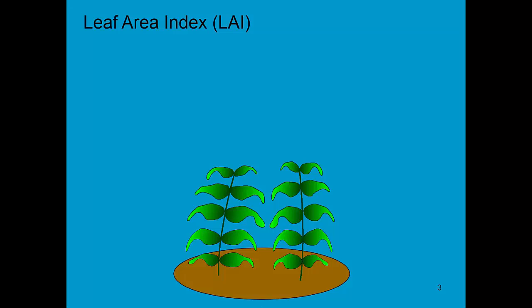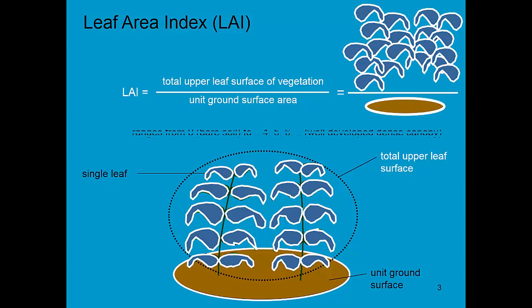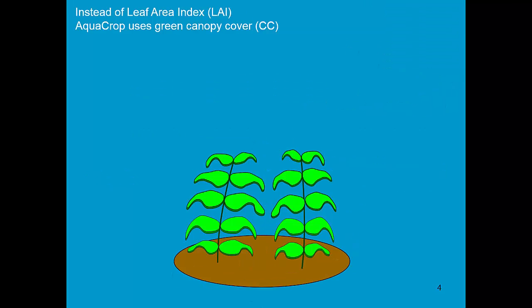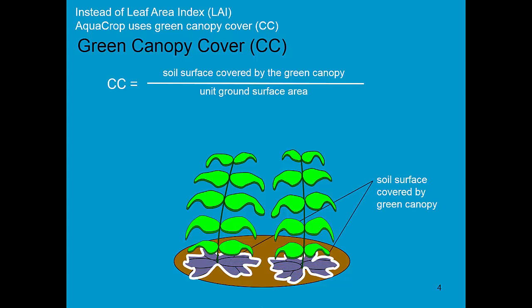A lot of models use the leaf area index. The leaf area index considers the upper surface of each of the leaves and expresses that per unit ground surface. It varies from 0 to 4, 5, 6, depending on how well the canopy is developed. Most models use leaf area index. In AquaCrop, we don't use leaf area index. We use the green canopy cover. The green canopy cover is the soil surface covered by the green canopy per unit ground surface. If the sun is right above the crop, then the shadow on the soil will give the soil surface covered by the green canopy.